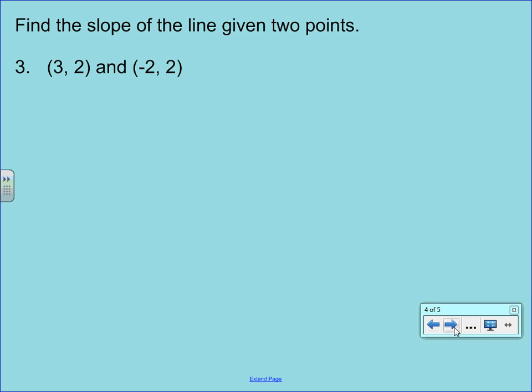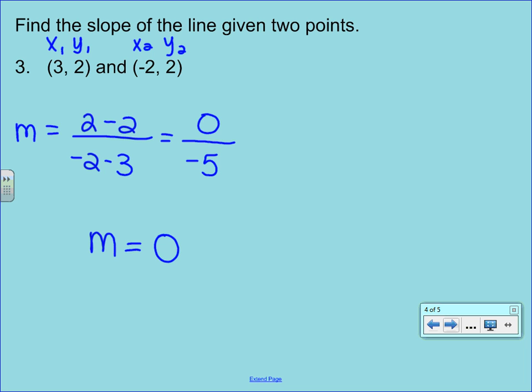Alright, example number 3. Again, always start by labeling. Then we'll plug these numbers into our formula. M equals 2 minus 2 over negative 2 minus 3. In the numerator we get 0. In the denominator we get negative 5. Again, you cannot leave your answer like this because this fraction can be reduced. 0 divided by negative 5 is 0. So we actually have a slope of 0.